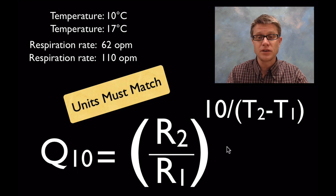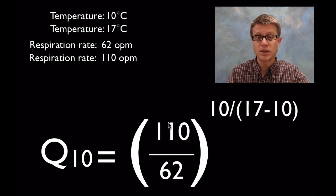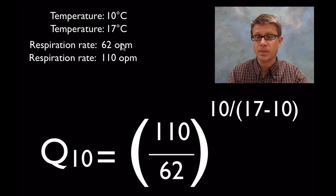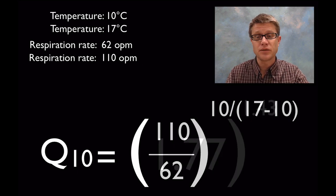And so let's throw these values into our equation. So what do we get? 110 divided by 62. Again that's our second rate minus our first rate. And then we're going to raise that to the power of 10 divided by our second temperature, 17 minus our first, which was 10.